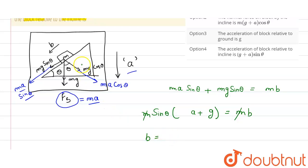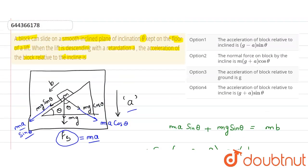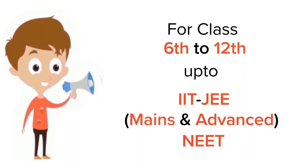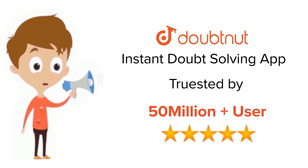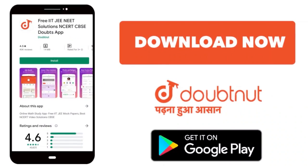So the acceleration with which this block is descending down the incline is equal to (a plus g) times sin theta. Therefore, the acceleration of the block relative to the incline is (g plus a) sin theta — so option 4 is correct. For class 6 to 12, IIT-JEE and NEET level, trusted by more than 5 crore students — download DoubtNet app today.